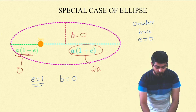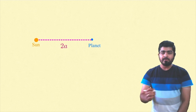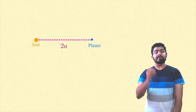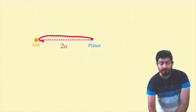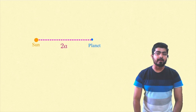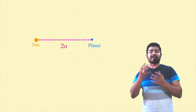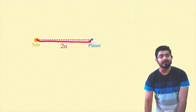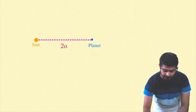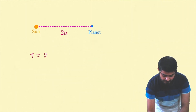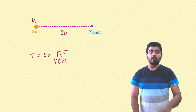With b equal to zero, the planet follows a straight-line path. For the complete cycle — the planet falls toward the Sun and (assuming it bounces back) returns to the start — the total time period is T = 2π√(a³/GM), where M is the mass of the Sun.